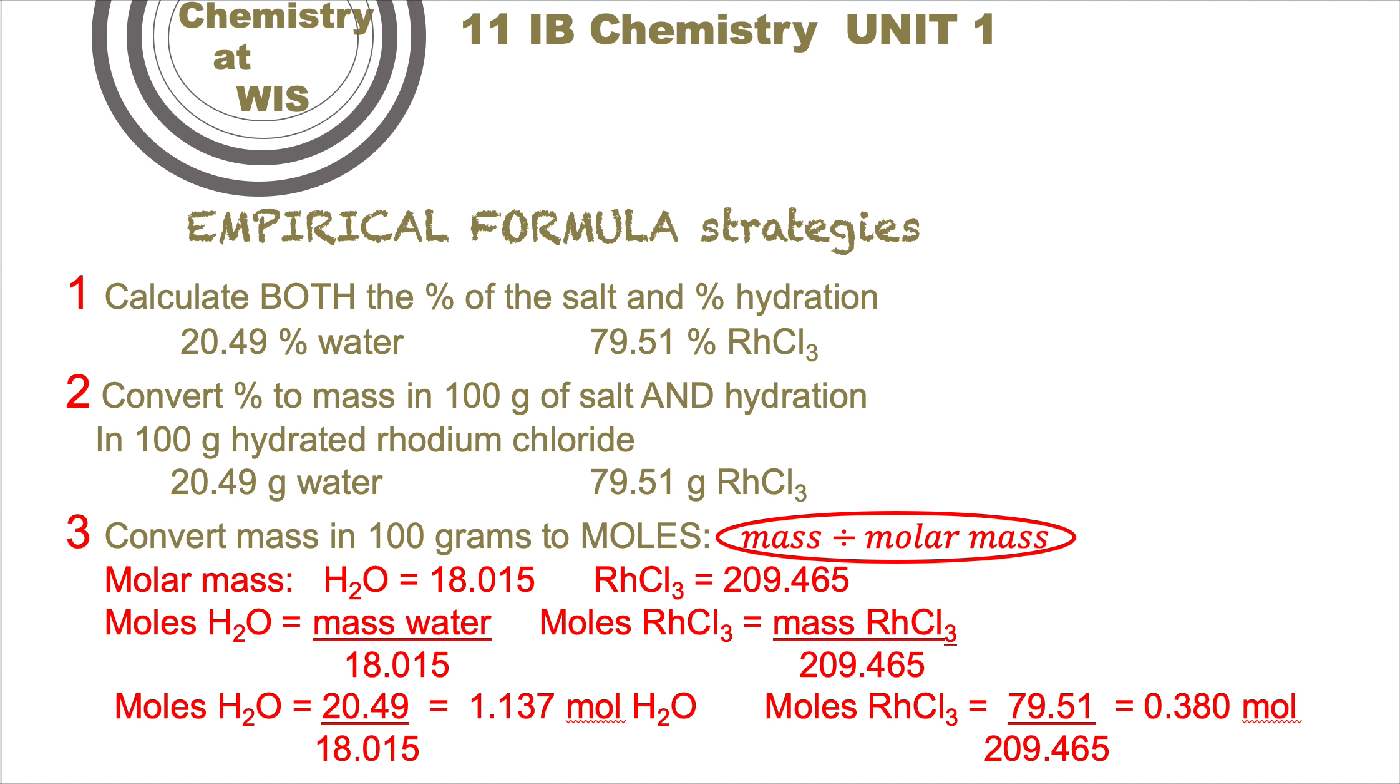Then we calculate the number of moles. The mass of the components in 100 grams of the salt and water, divided by the molar mass. For water we've got 18.015 g/mol, for rhodium trichloride we've got 209.465 g/mol. Using the numbers from step two, divide each of them, and we end up with 1.137 moles of H2O and 0.380 moles of RhCl3.